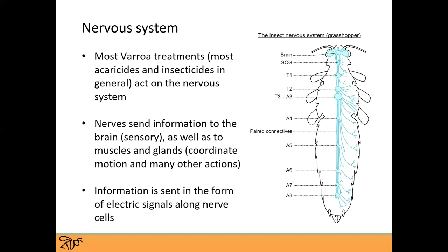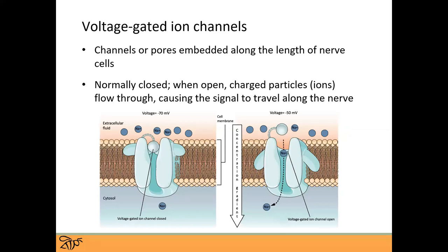A lot of these treatments act by stopping that electrical signal from being sent. How this works at the cellular level is through what are called voltage-gated ion channels — little pores or channels in neurons that allow charged ions to flow through them. This changes the charge of a small part of the neuron, causing a chain reaction that sends the message along. Normally these pores are closed; when triggered to send a message, they open and those charged ions flow through.